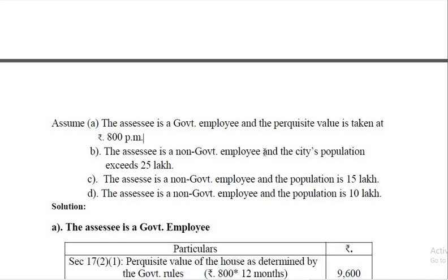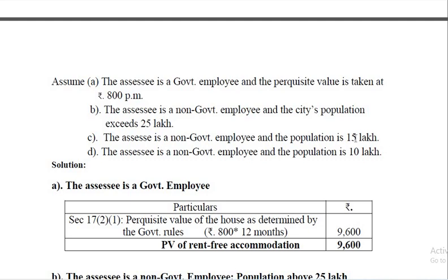In case B, the employee is a non-government employee and the city's population exceeds 25 lakh. The accommodation is owned by the employer. When the accommodation is owned by the employer, you consider the population of the city where the employee works. If the population is more than 25 lakh, then 15% of salary is taken as the value of accommodation.